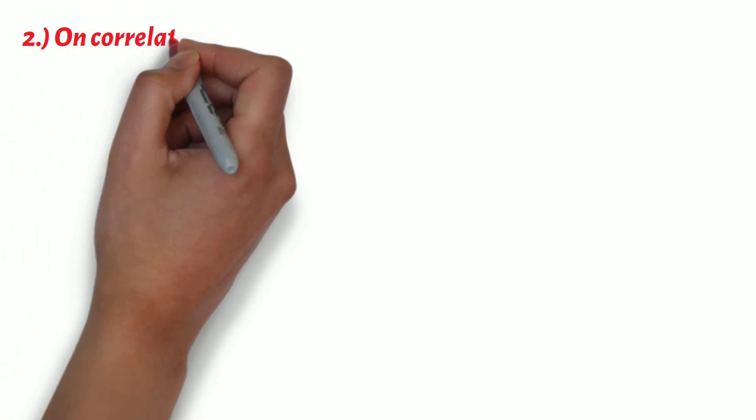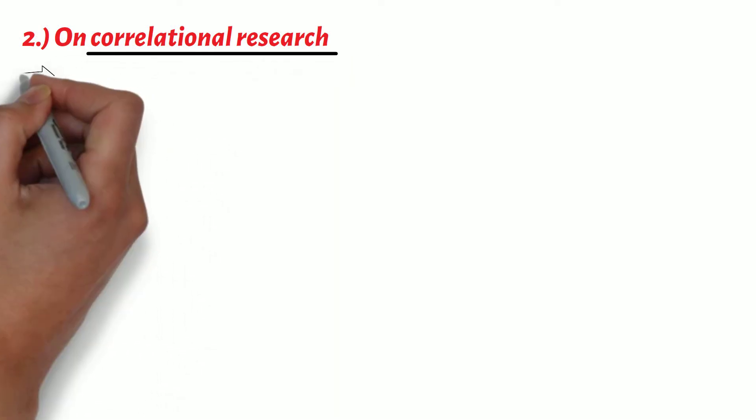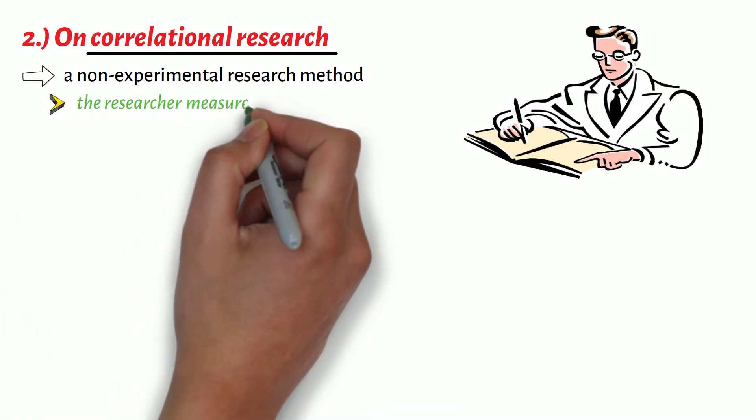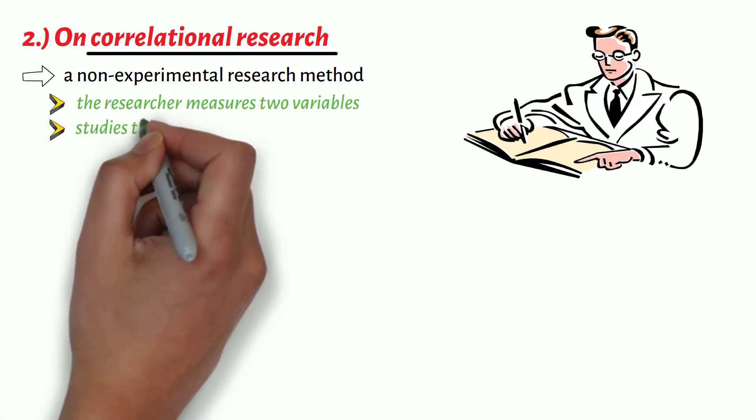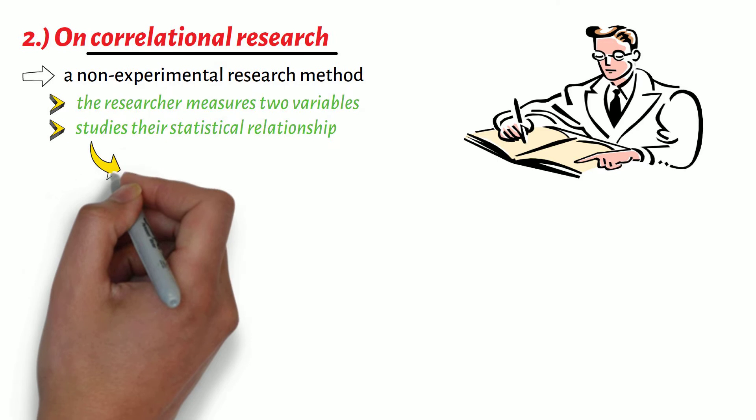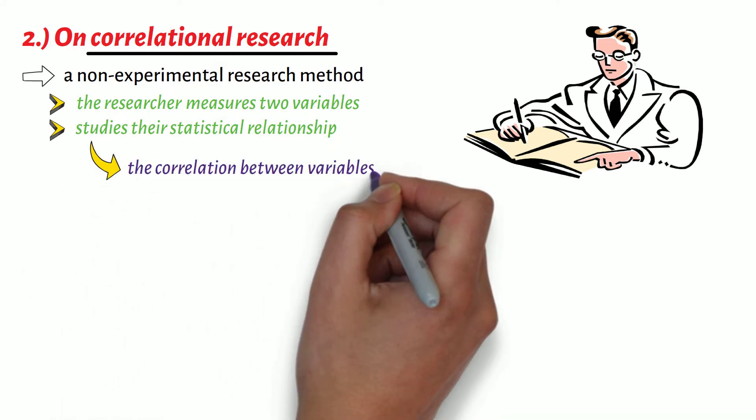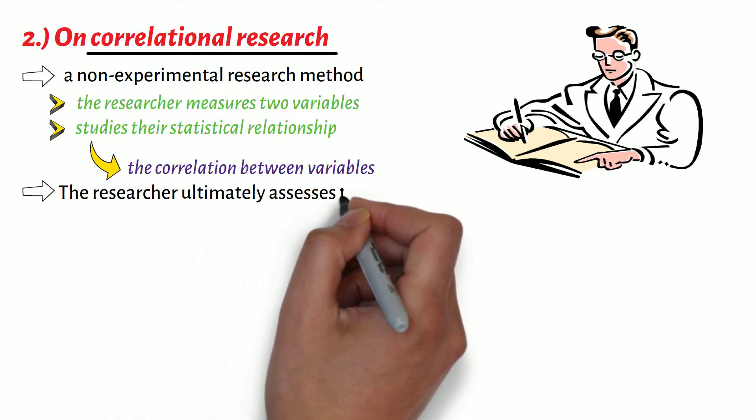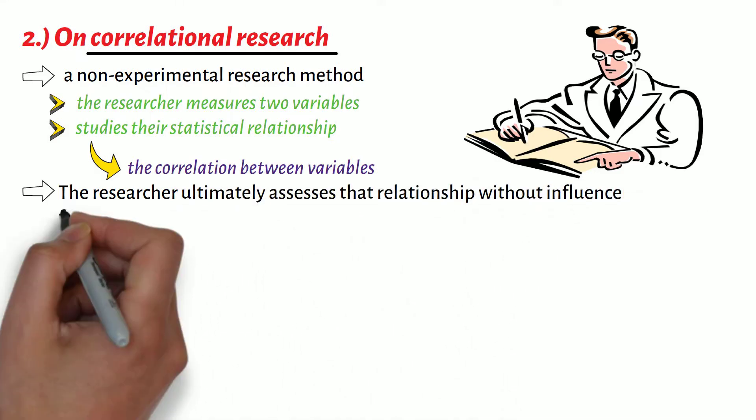Second, on correlational research. Correlational research is a non-experimental research method where the researcher measures two variables and studies their statistical relationship, that is, the correlation between variables. The researcher ultimately assesses that relationship without influence from any peripheral variable.